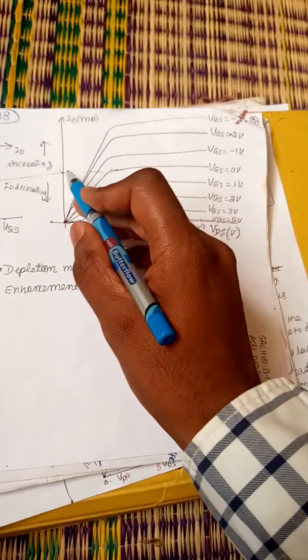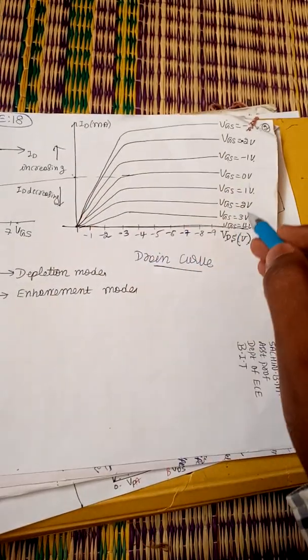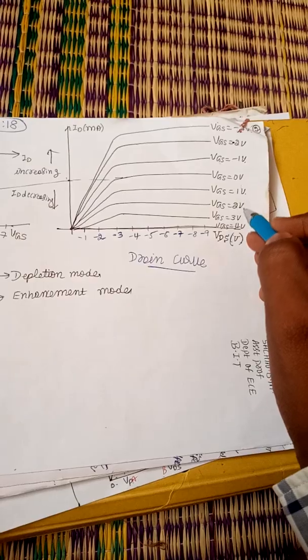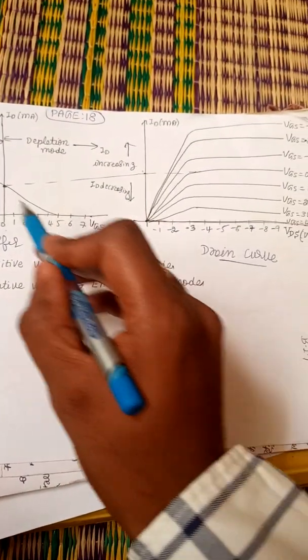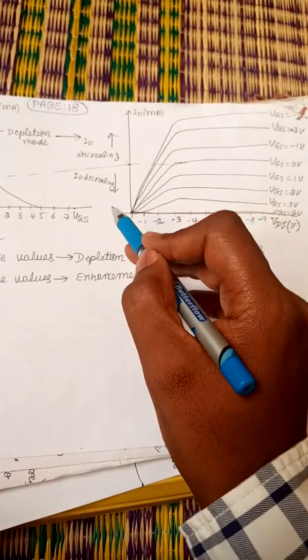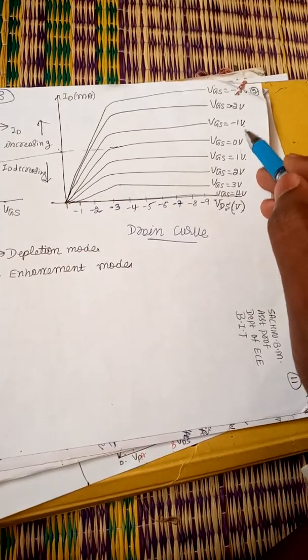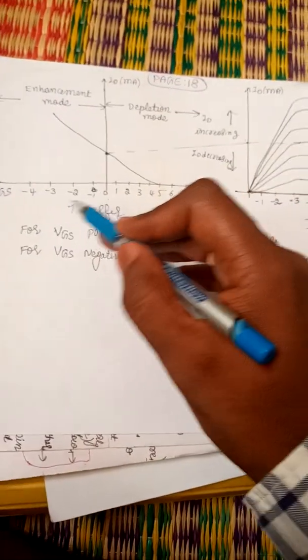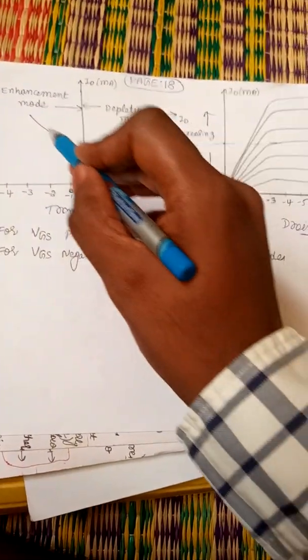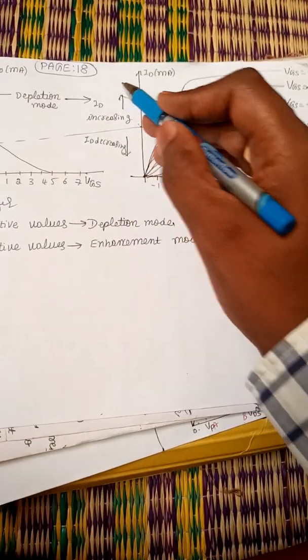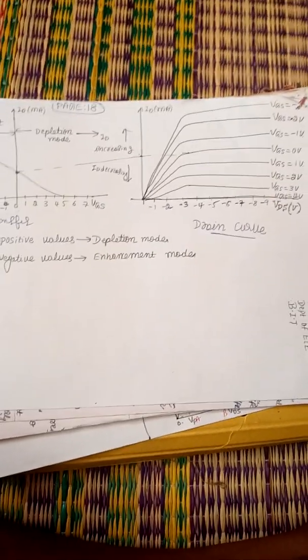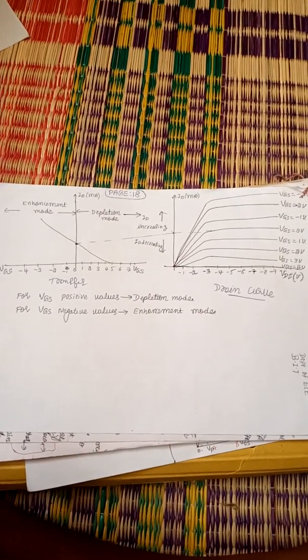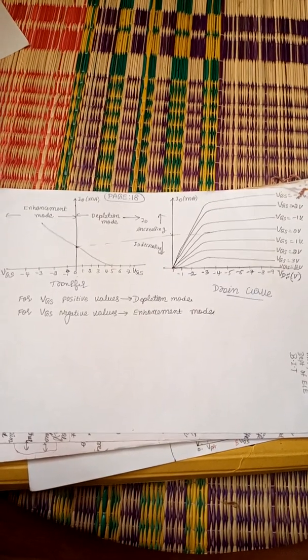In the drain characteristics: when Vgs equals 0, ID equals IDSS. When Vgs is positive (plus 1, 2, 3, 4), drain current decreases. When Vgs is negative (minus 1, 2, 3, 4), drain current increases. I hope you understood the concept of P-channel depletion type MOSFET. If you have any doubt you can ask me later. Thank you.